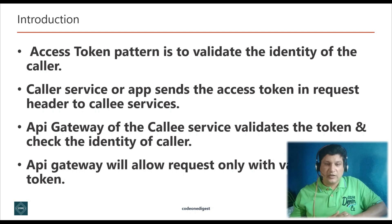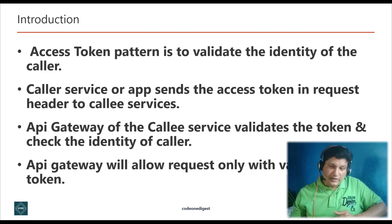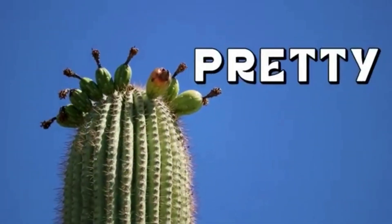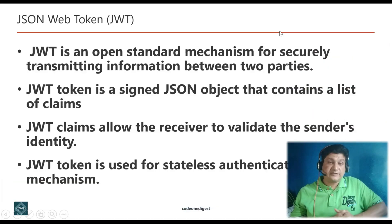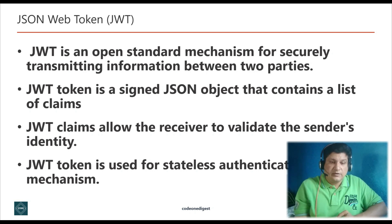The JWT token, or access token design pattern, is based on the OAuth2 standard. OpenID Connect added federated identity on top of OAuth2 in 2014. OAuth2 and OpenID Connect together offer standard specifications for identity providers.